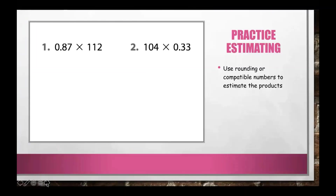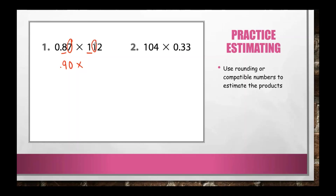Let's practice some estimating using rounding or compatible numbers to estimate the products. Problem number one is 0.87 × 112. We look for the digit in the greatest place value that is non-zero — in 0.87, that is 8. Looking at the 7 to the right, since 7 is in the 5–9 range, we round up: 0.87 becomes 0.9. For 112, the greatest non-zero place is the 1 in the hundreds place; looking at the 1 in the tens place, it stays the same, and the remaining digits become 0, giving us 100. Multiplying 0.9 × 100 gives us 90.